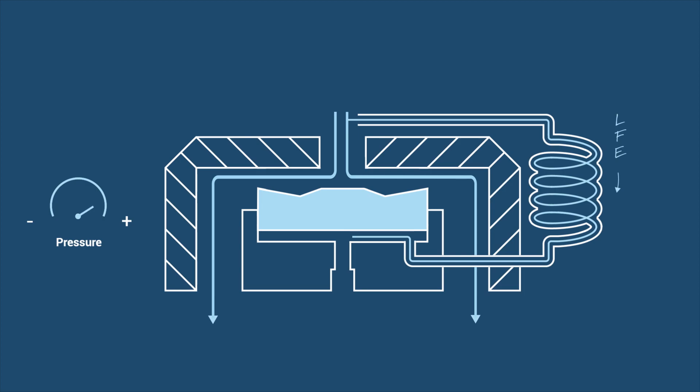If the pressure drop in the LFE is low, then the pressure in the chamber is high, creating a high upwards force on the piston. If the pressure drop in the LFE is high, then the pressure in the chamber is low, creating a low upwards force on the piston.